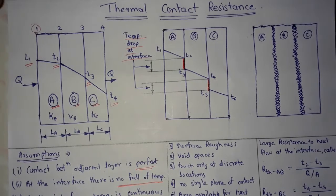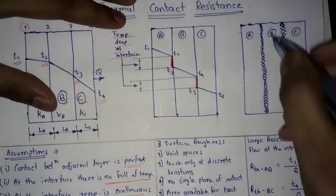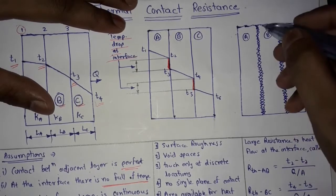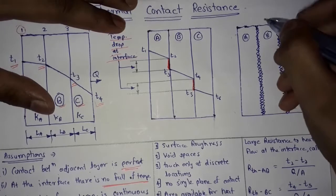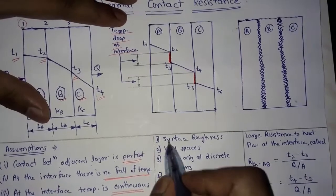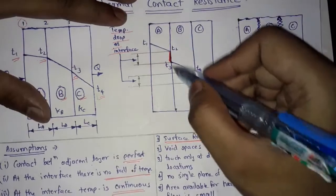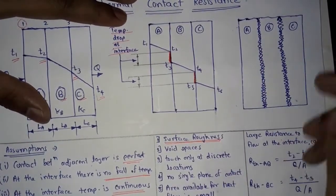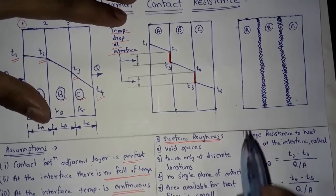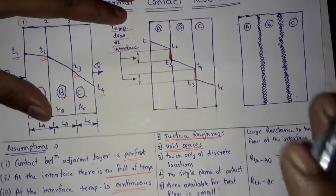When we look at the very micro level at the interface of these walls, we can find that the structure or interface will be like this — it is a rough surface at the interface. At the interface, surface roughness is always present at a very micro level.